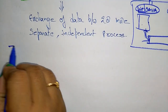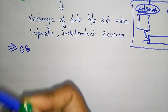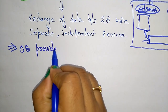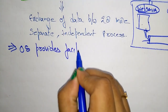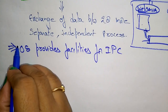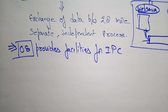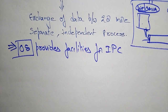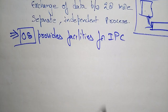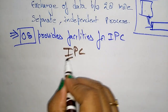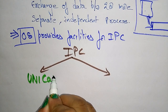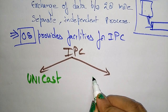The operating system provides the facility for inter-process communication. Inter-process communication is divided into two types: it may be unicast or it may be multicast.